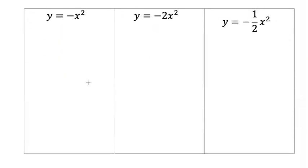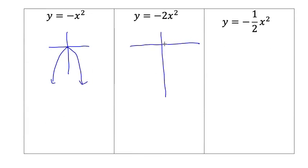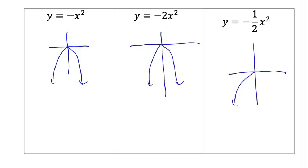Now we have similar parent graphs that are negative, and these are going to be the same, just upside down. One will be steeper and one will be flatter. So there are just some rough sketches of these parent graphs.